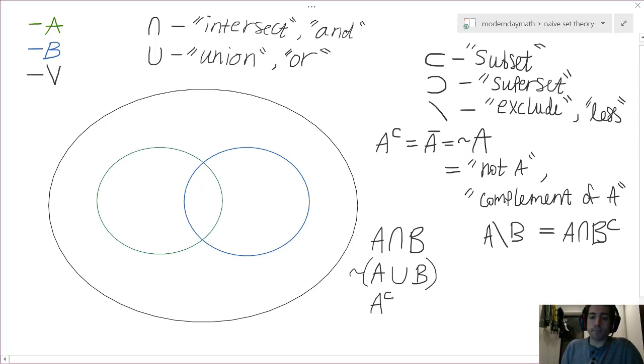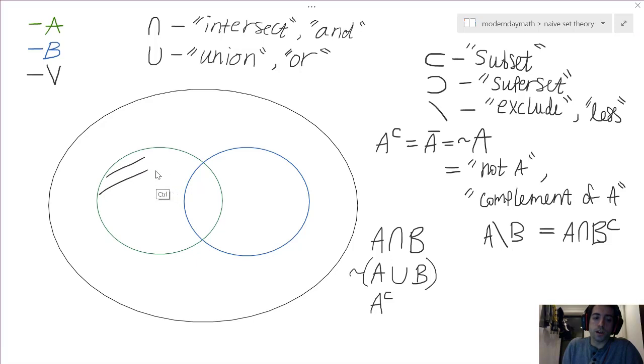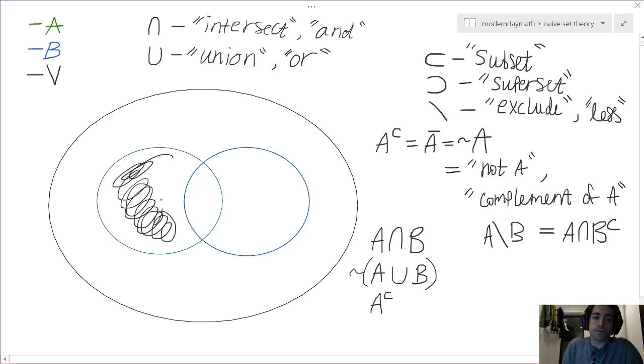So, we discussed A complement before, that's going to be everything that is not in A. If we talk about A and B complement, B complement we know would be everything that's not in B. And so then if we intersect that with A, we're just going to be left with the section of A that is not shared with B.